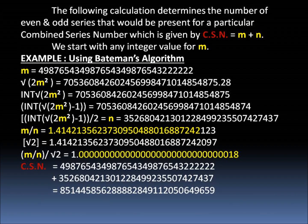We start with any integer value of M. For example, using Bateman's theorem, M is equal to a very large, even integer. We then square it, multiply it by 2, and take its square root. We then take its integer value to get rid of any decimal places.